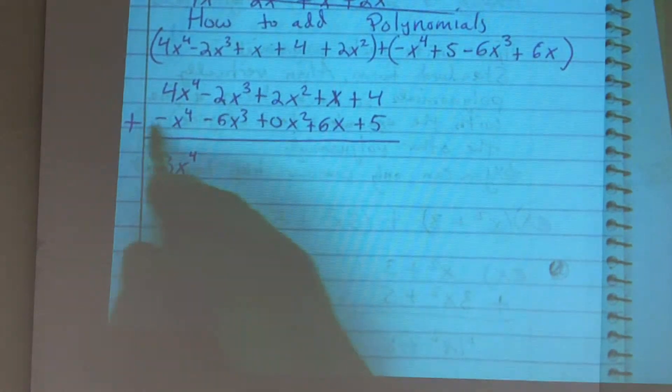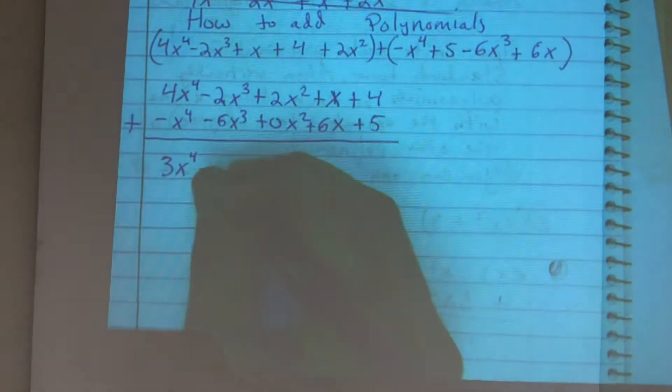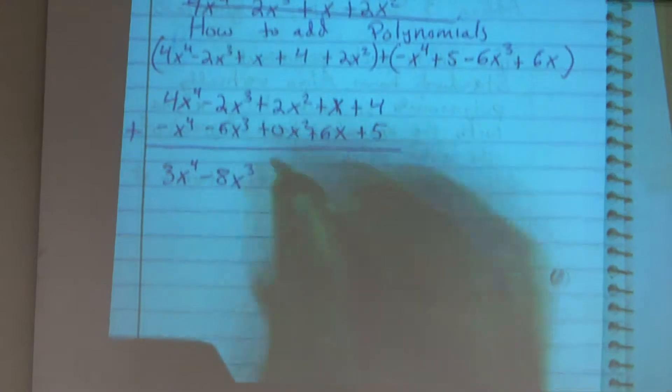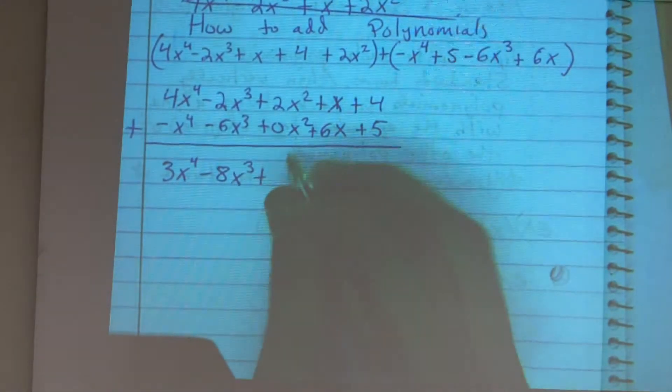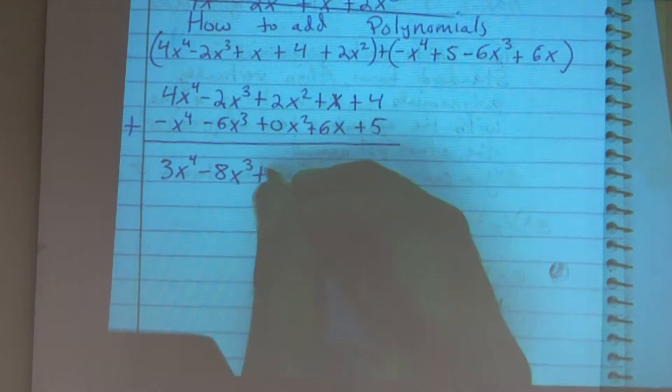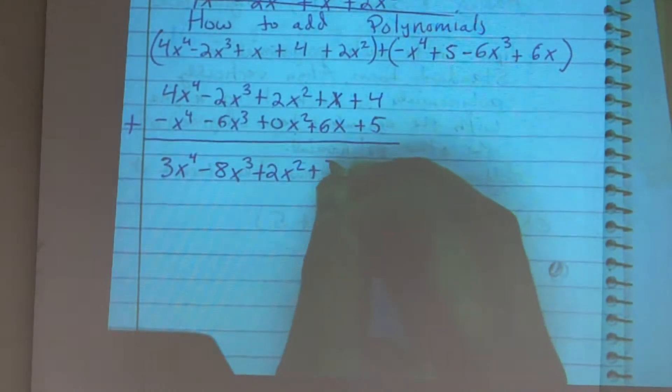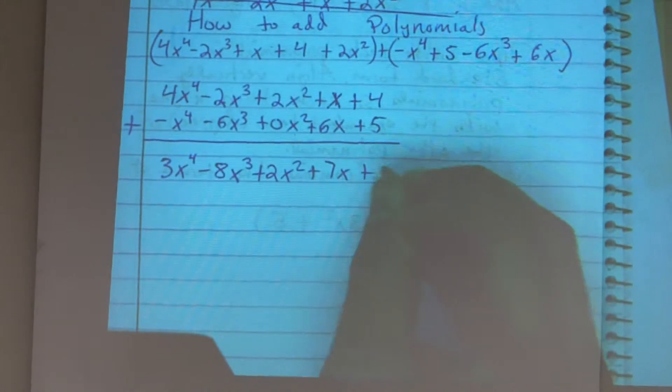A negative x to the third plus a negative x to the third gives me a negative 8x to the third. 2x squared plus 0x squared gives me 2x squared plus 7x plus 9.